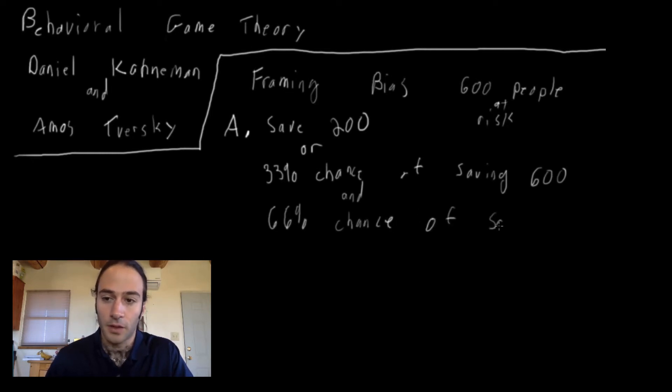So 33% chance of saving 600 people and 66% chance of saving none. I just rounded the probabilities. Of course, it's 33.3 and 66.6. So this is group one. They had this decision problem.